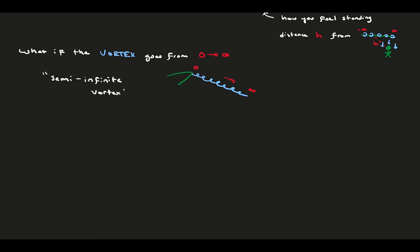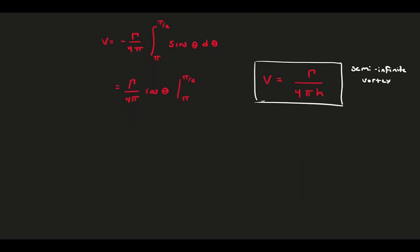Our analysis is the same. We just change our integration bounds to go from pi to pi over 2, effectively cutting our window in half. Once it's all done, we have the equation for the induced velocity of a semi-infinite vortex, which is half that of the infinite vortex. This is the velocity that a point along the foil span, which is distance h from the tip, feels due to the vortex presence. This equation will be integral in our calculation of the induced velocity and downwash effect.